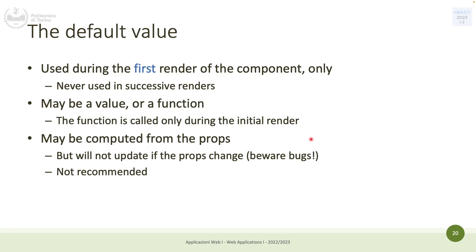The default value could be a value, zero, true, false, an array, or a function that calculates something — executed only during the initial render. The initial state may be computed from props coming from a parent. However, this is not recommended: it's possible but not recommended because the initial value will not be updated if the prop changes, since the initial value is only used during the first render.